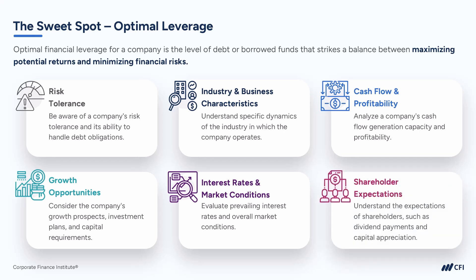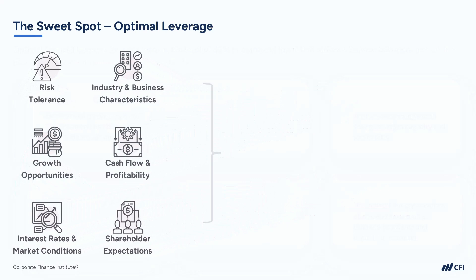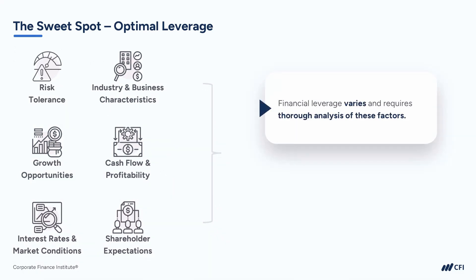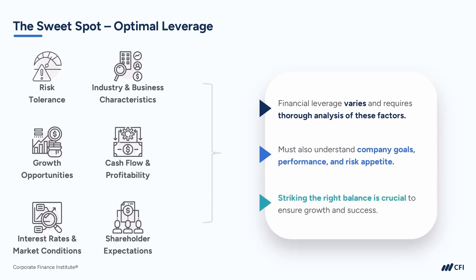There are also shareholder expectations to consider. We need to understand these expectations, such as expectations for dividends or capital appreciation. The optimal leverage needs to align with the company's ability to meet these shareholder expectations. Ultimately, the optimal financial leverage or leverage sweet spot varies from company to company and industry to industry. It requires a thorough analysis of these factors along with a comprehensive understanding of the company's goals, financial performance, and risk appetite. Striking the right balance is truly crucial to ensure sustainable growth and long-term success.